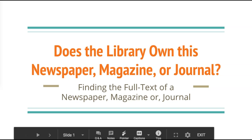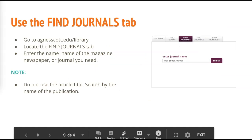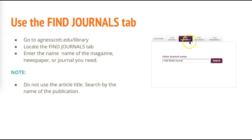Finding the full text of a newspaper, magazine, or journal is easy at McCain Library. Basically all you need to know is to use the Find Journal tool. We know it says Find Journals, but it also means Find Magazine and Newspaper — any periodical that we have.